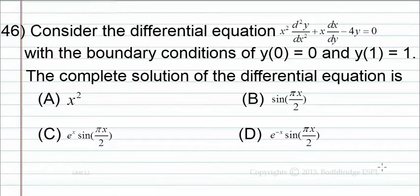Consider the differential equation x² d²y/dx² + x dy/dx − 4y = 0, with boundary conditions y(0) = 0 and y(1) = 1. The complete solution of the differential equation is: option A, x²; option B, sin(πx/2); option C, e^x sin(πx/2); option D, e^(−x) sin(πx/2).